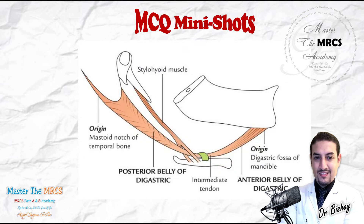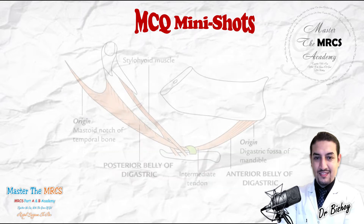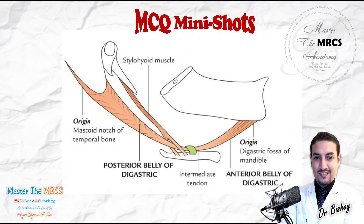Take care regarding the digastric muscle — it's not a strap muscle. It has two bellies: the anterior belly arises from the digastric fossa of the mandible, and the posterior belly arises from the mastoid notch of the temporal bone. So there are two origins for the digastric muscle because it has two bellies.